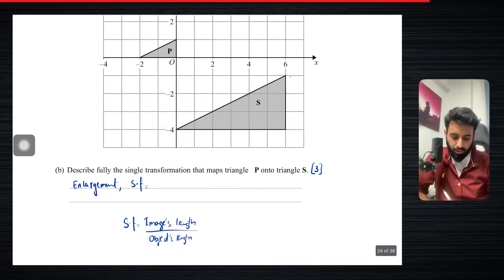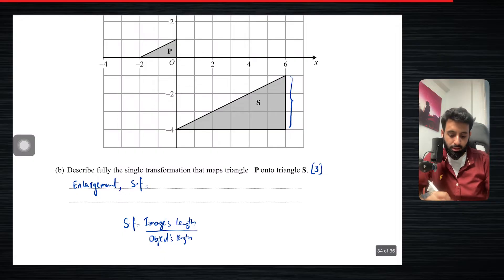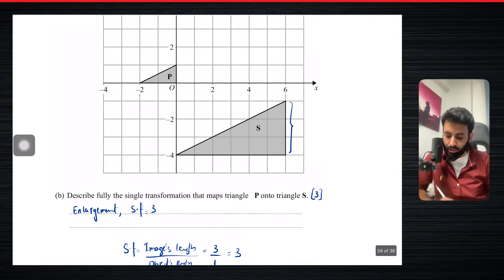So if you take your height of the triangle, that means S, by the way, is the image and P, by the way, is the object. So the height of the image is three units, and the height of the object is one unit. So what's three upon one? That's equal to three. So that means we have our scale factor.